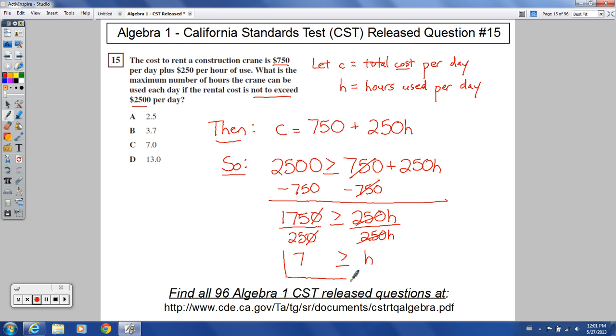So seven has to be the maximum that you can have for hours. Seven is greater than or equal to H. H represents your hours used per day. So you can use this no more than 7, or 7.0 as they have it here, 7.0 hours.